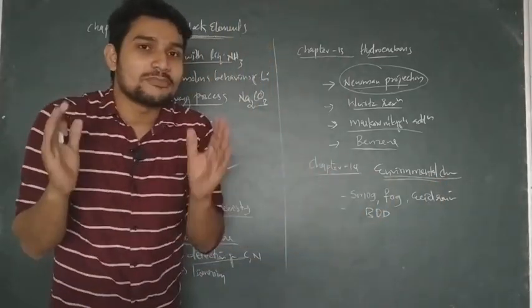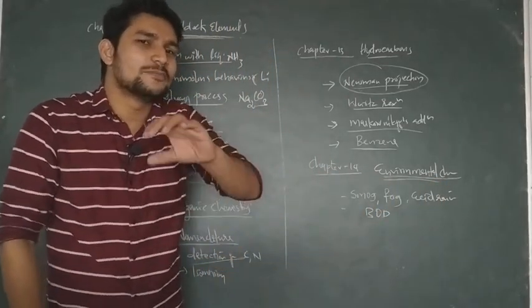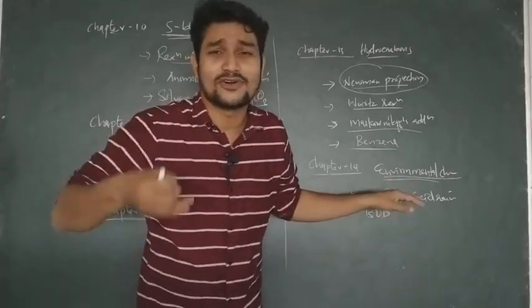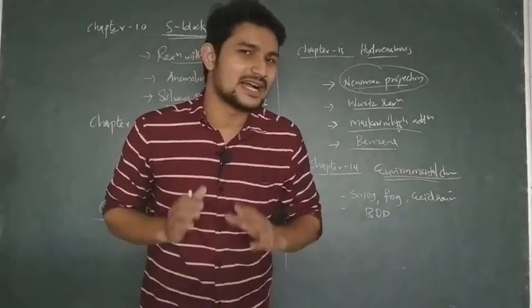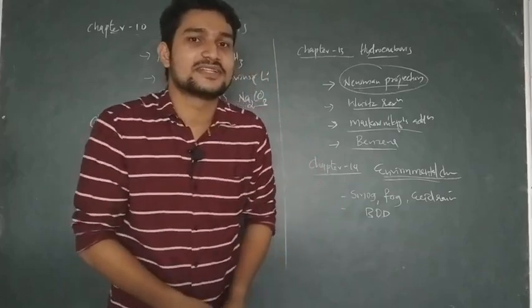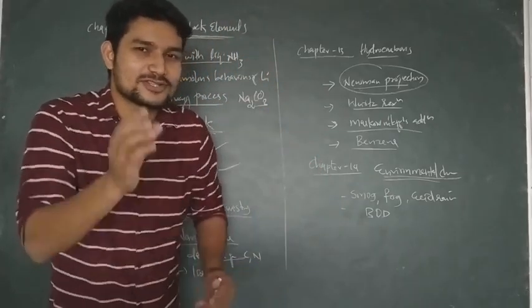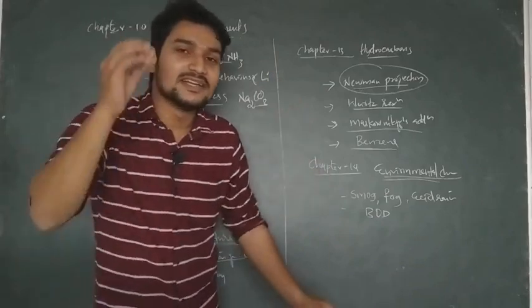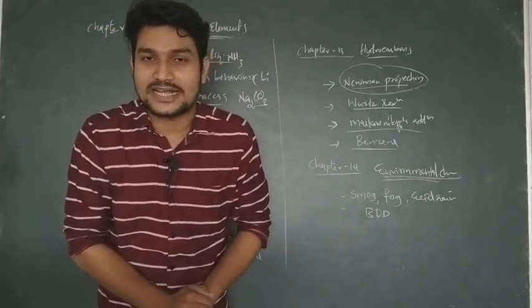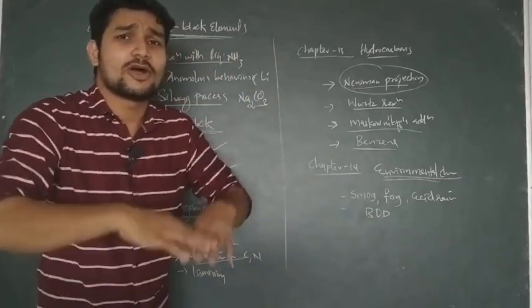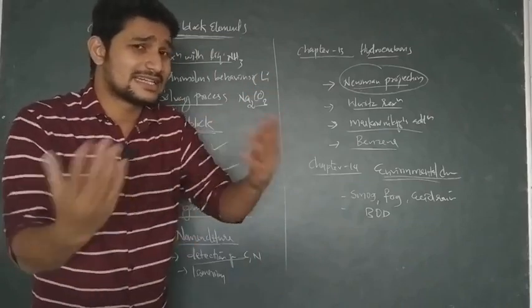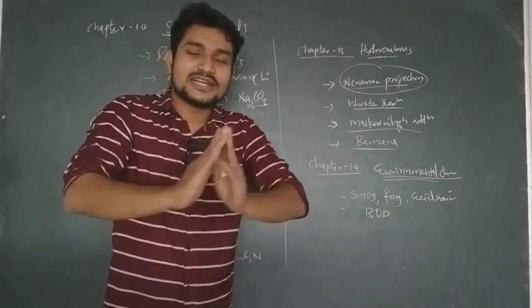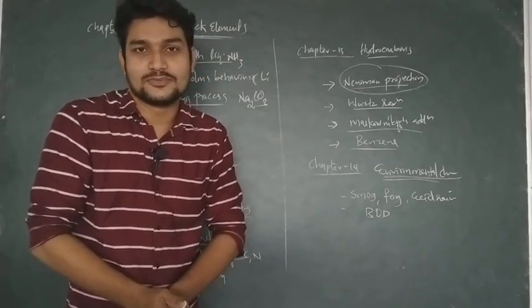The next topic is environmental chemistry. You will study pollutions, smog, fog, biological oxygen demand, and acid rain. You will also study global warming and the greenhouse effect. These topics are covered in chapter 14 on environmental chemistry.